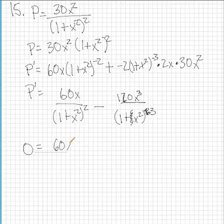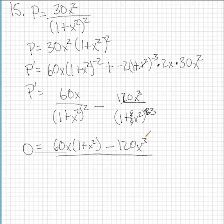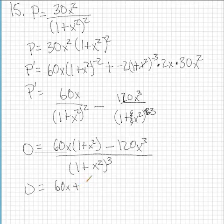So it's going to be 60x times one plus x squared minus 120x cubed, all over one plus x squared to the third. And this is equal to zero. Then it's going to be 60x plus 60x cubed minus 120x cubed over one plus x squared cubed.